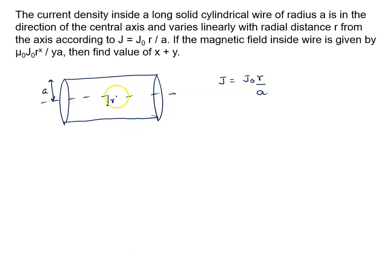Now to find magnetic field at distance r, we can apply Ampere's circuit law. Integration B dot dl equal to μ₀i.